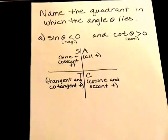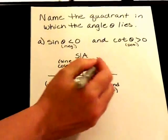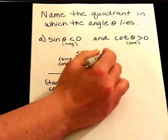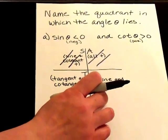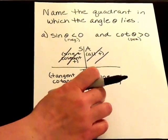So we see that sine has got to be negative, so we can eliminate the first two quadrants. So sine is negative in both of these quadrants. Now we need to find out which one cotangent is positive.